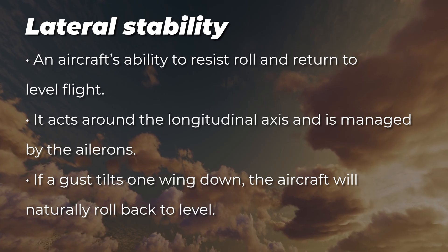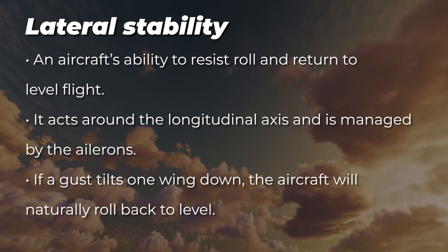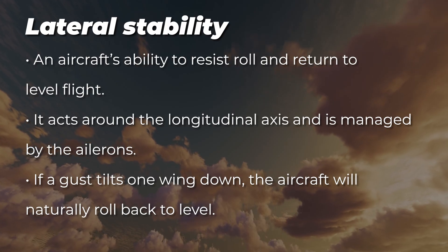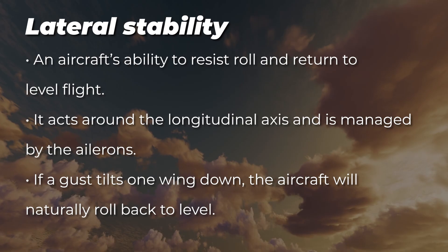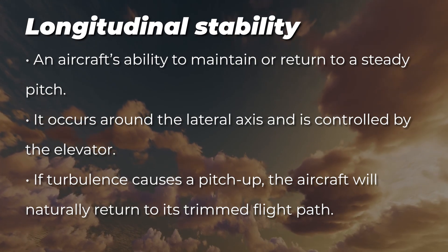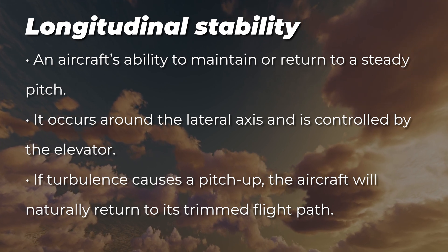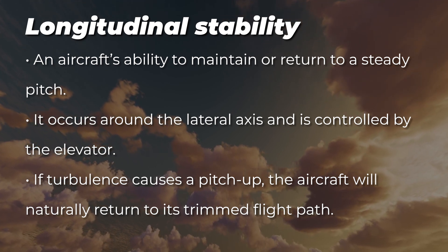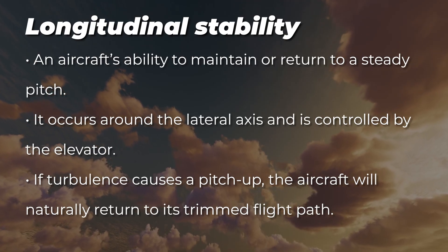Lateral stability is an aircraft's ability to resist roll and return to level flight. It acts around the longitudinal axis and is managed by the ailerons. If a gust tilts one wing down, the aircraft will naturally roll back to level. Longitudinal stability is an aircraft's ability to maintain or return to a steady pitch. It occurs around the lateral axis and is controlled by the elevator. If turbulence causes a pitch up, the aircraft will naturally return to its trimmed flight path.